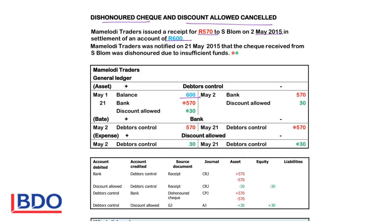He paid 570, so the debtor was reduced on the credit side with 570 and the bank was increased on the debit side with 570. This was in settlement of an account of 600, so the debtor's was credited with the 30 rand so that both sides have the same amount because the account was settled in full, and you will debit discount allowed with 30 rand to increase the expense. On 21 May the cheque was received back from the bank as a dishonoured cheque due to insufficient funds.